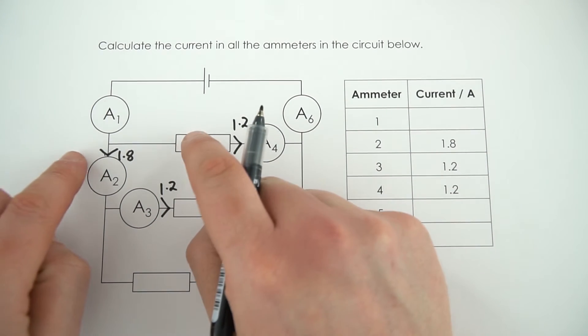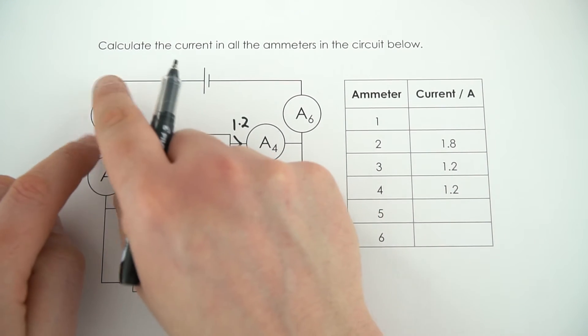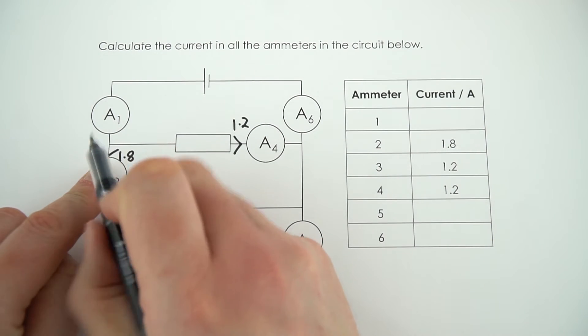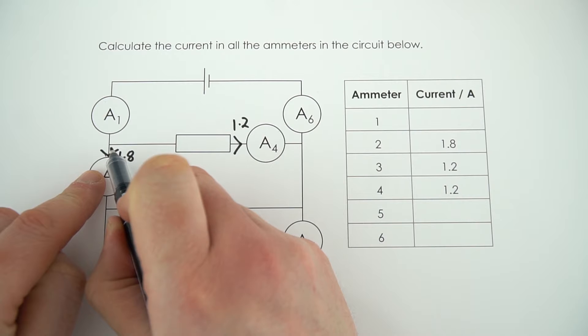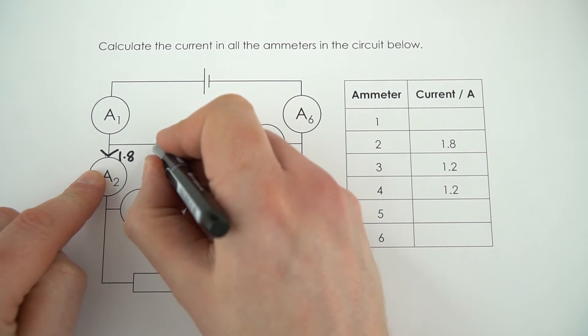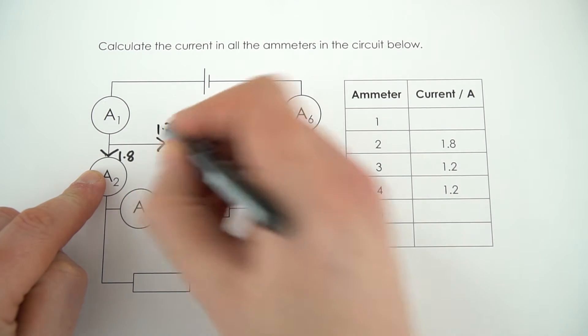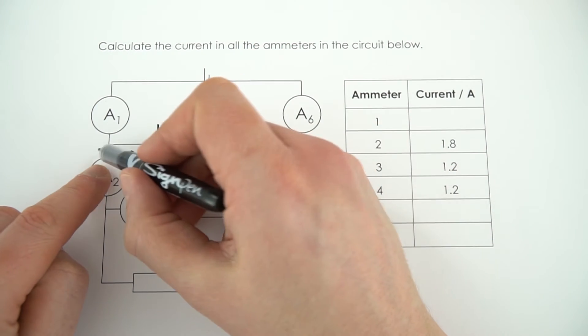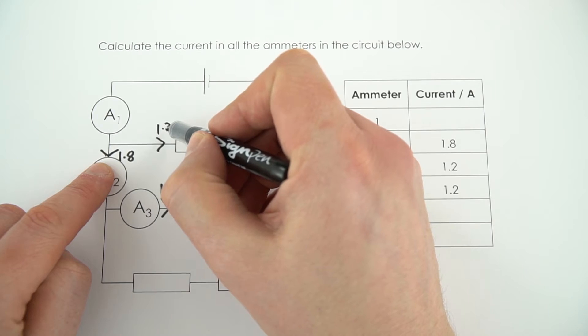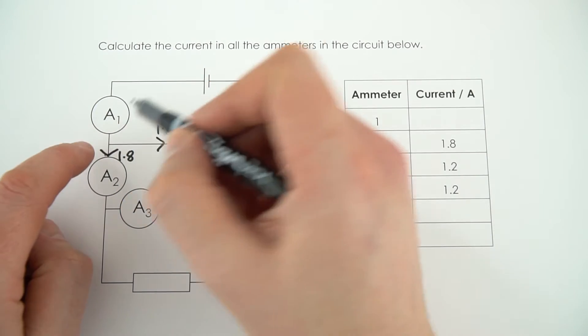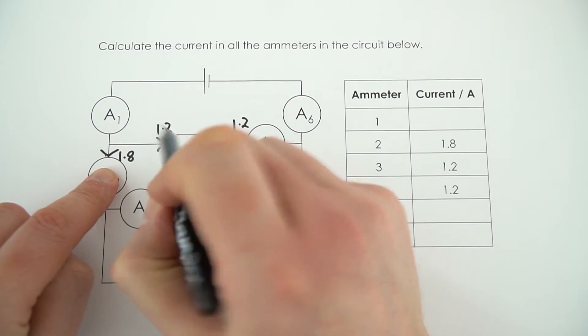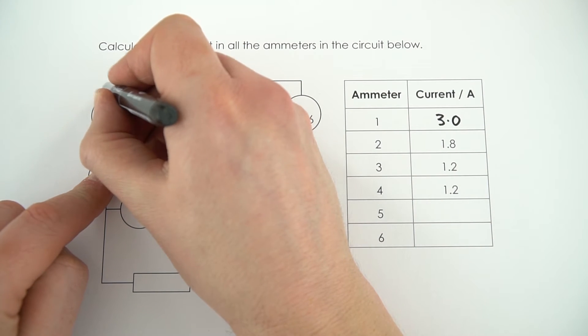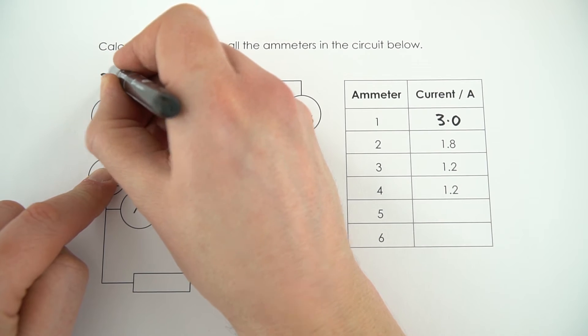We've got to remember that if you have parts of a parallel circuit, the current splits at a junction. At this junction down here we've got 1.8 amps going down and 1.2 amps flowing off to the side. So ammeter 1 must be equal to 1.8 plus 1.2, which means the value is 3.0. I'm just going to label that on my diagram.